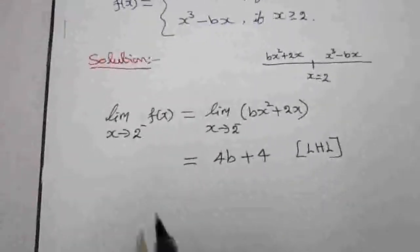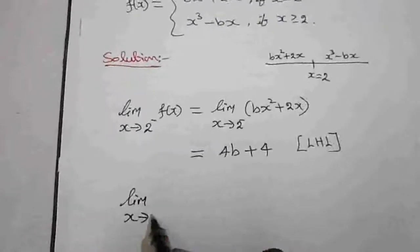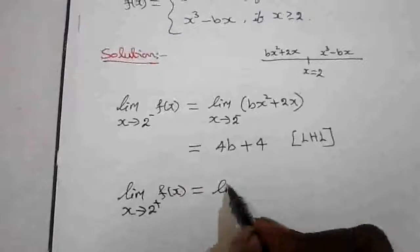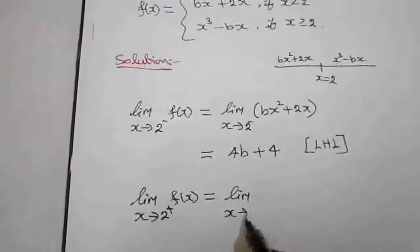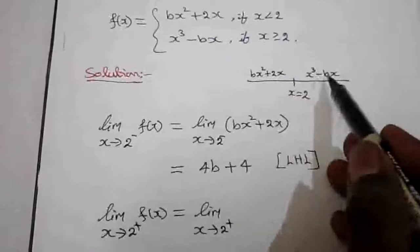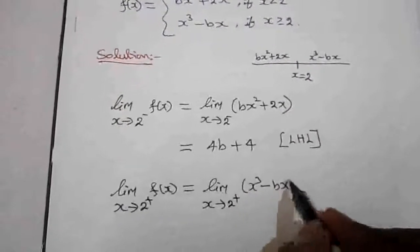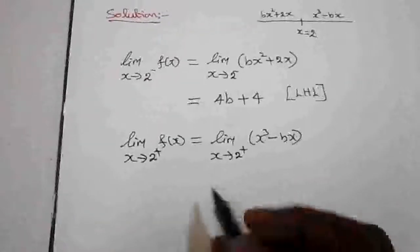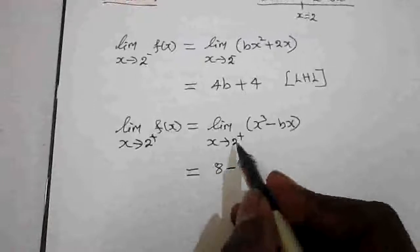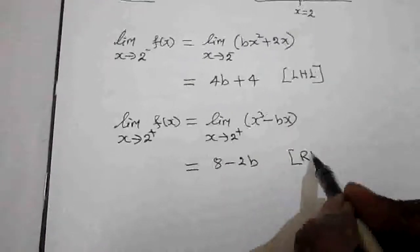Finding the right-hand limit: the limit as x tends to 2 plus of f(x) equals the limit as x tends to 2 plus of the right-hand function x cubed minus bx. Substituting x equals 2: 2 cubed is 8, minus 2b. So the right-hand limit is 8 minus 2b.